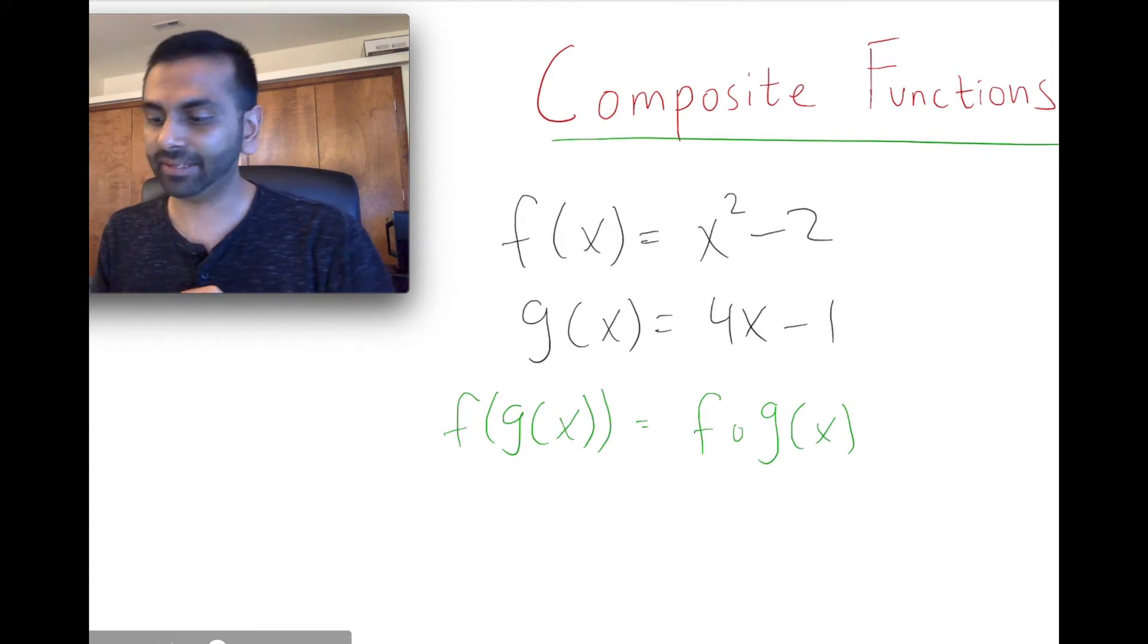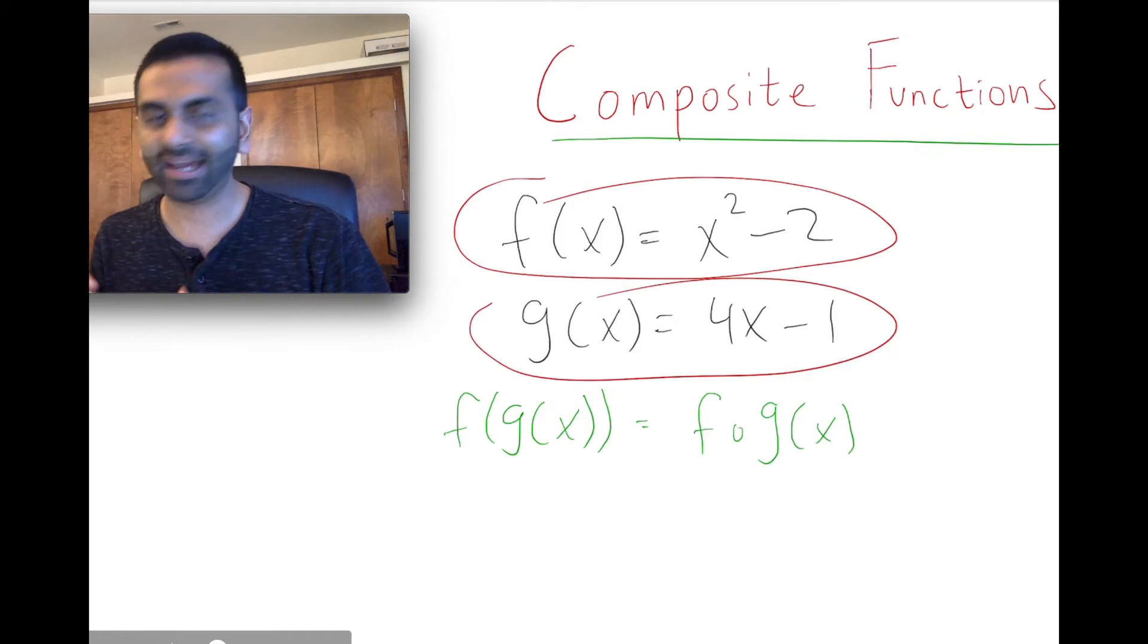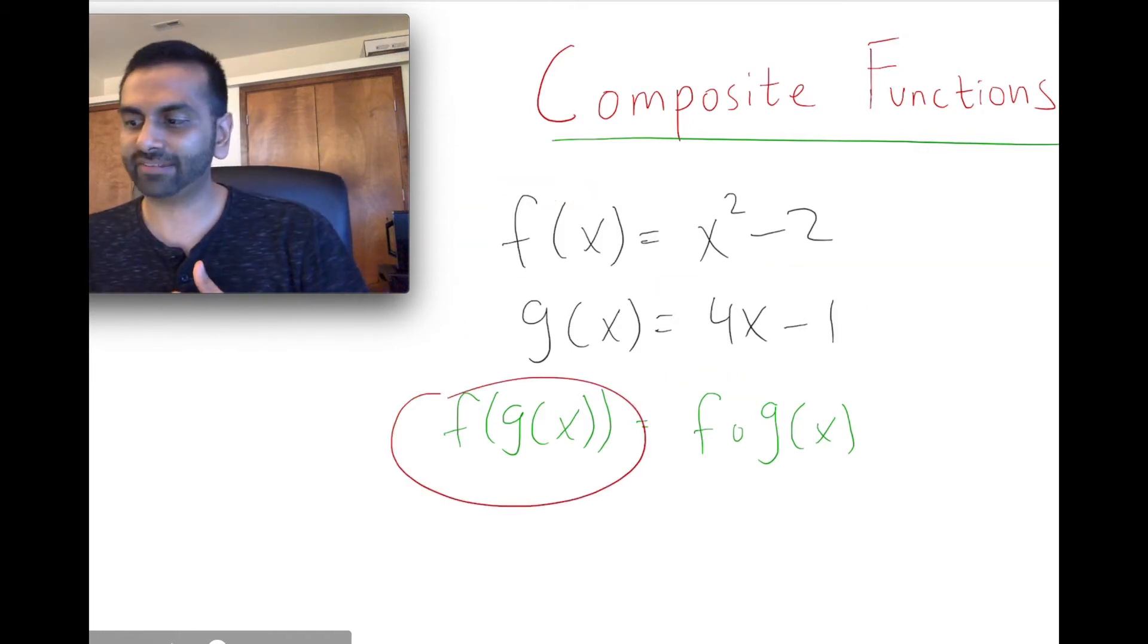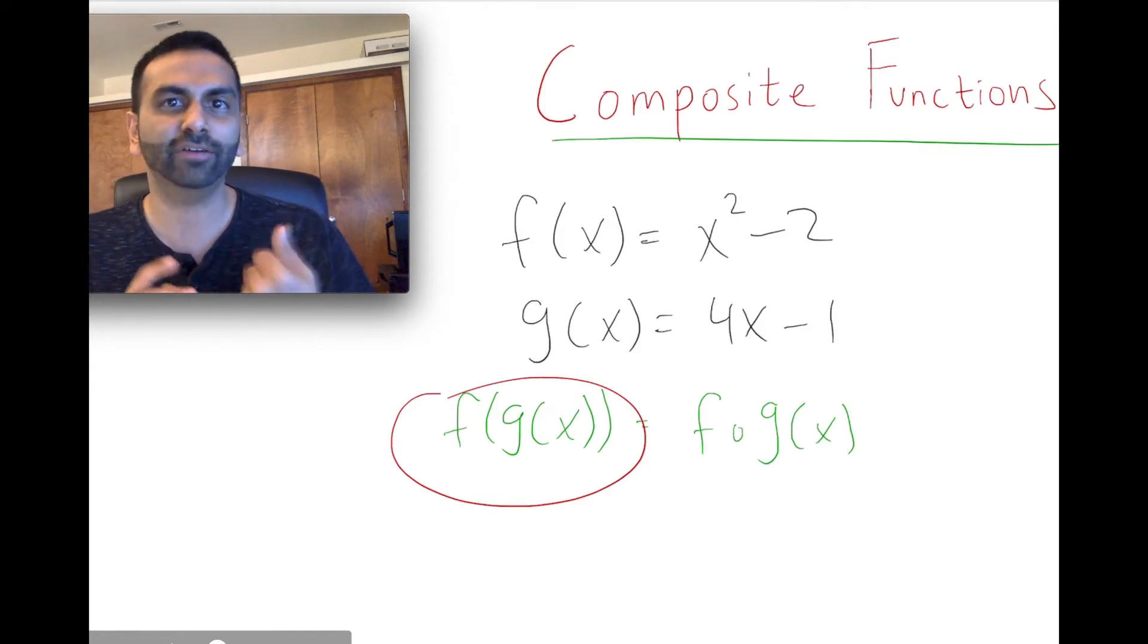For example, let's say you're given these two functions: f of x is this guy, g of x is this guy, and you're asked to find f of g of x. That's how you pronounce this, f of g of x.